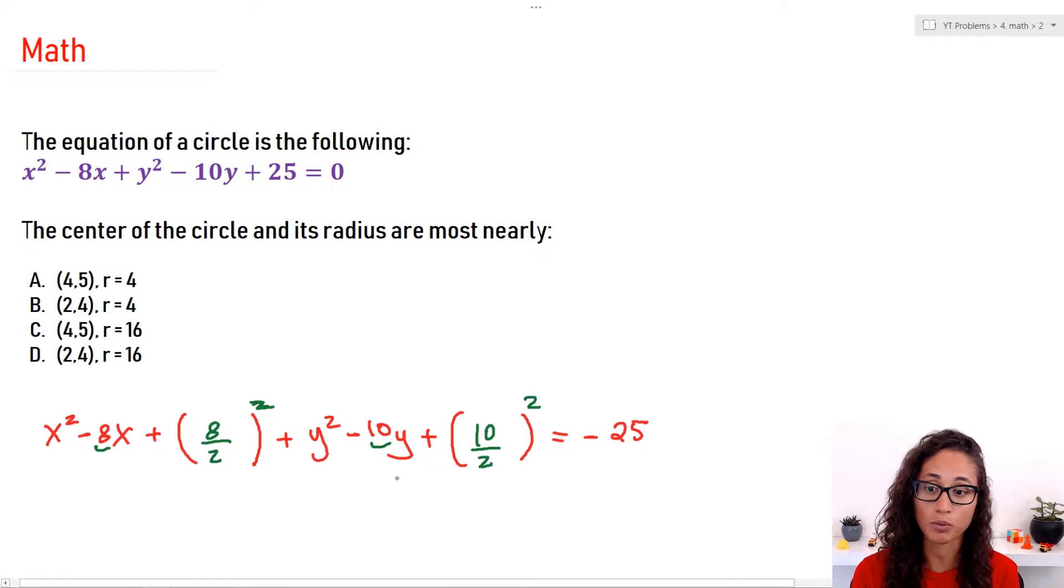But here's the problem. Whatever you do to this side, you have to actually add it to this side. So here, if you do 8 over 2, that's 4. 4 squared gives you 16. So I gotta make sure I add 16 here. You can't add here and not do it to this side. And the same thing with 10. 10 over 2, that's 5. 5 squared is 25. So make sure you add 25 here.